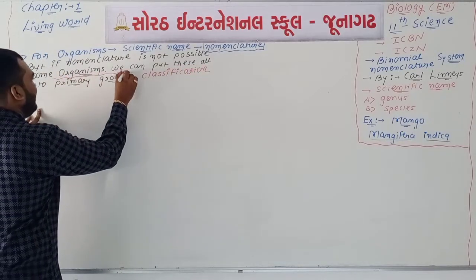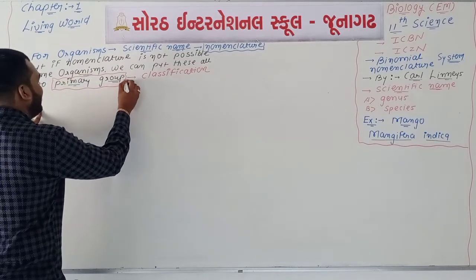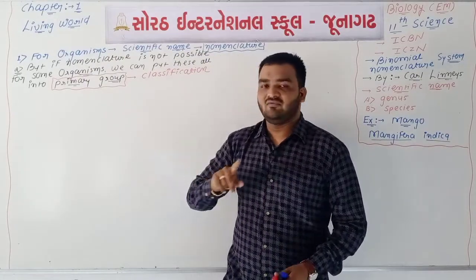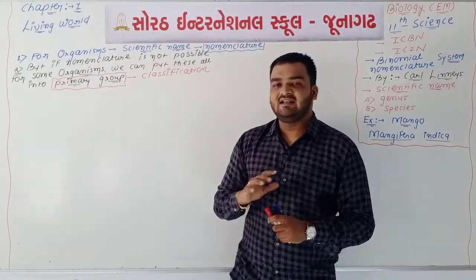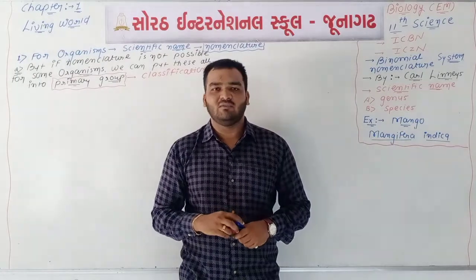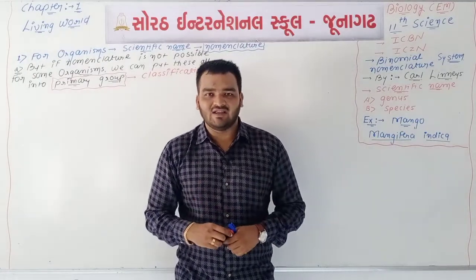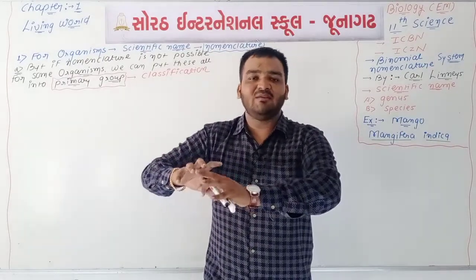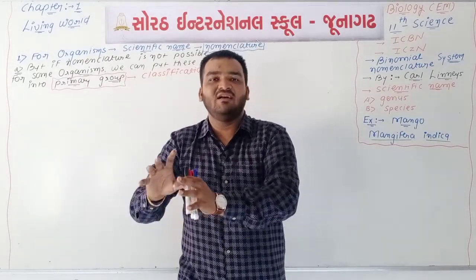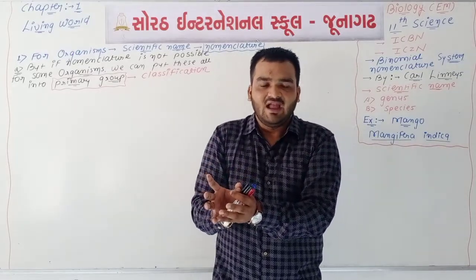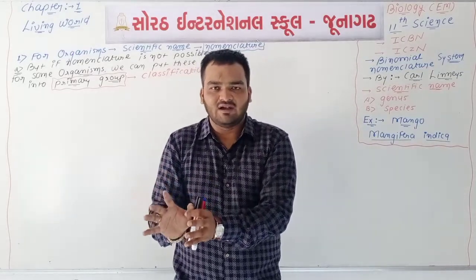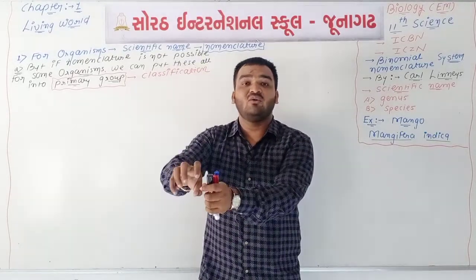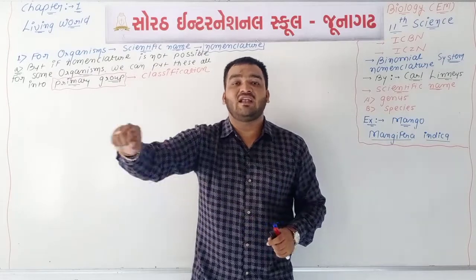The primary group concept is important. If you have some type of animal with a similar appearance or similar morphological characters, and nomenclature is not possible initially, then you can arrange this organism into the category of birds. Similarly, if you find a new creature similar to fish, you can arrange it into the category of fish.